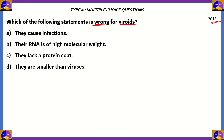Let's look at each option. Option A: they cause infections — this is true, as viroids do cause infections in some plants, so option A is incorrect as our answer. Option D: they are smaller than viruses — this is also a true statement because viroids are subviral particles, so option D is incorrect as our answer. Option C: they lack a protein coat — this is once again true, because viroids are exclusively made of RNA with no protein or fat coating over the RNA, so option C is also incorrect as our answer.